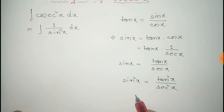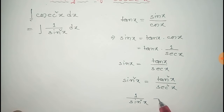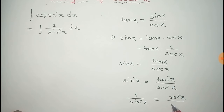And from this, taking the inverse, 1 by sin squared x is equal to sec squared x by tan squared x.